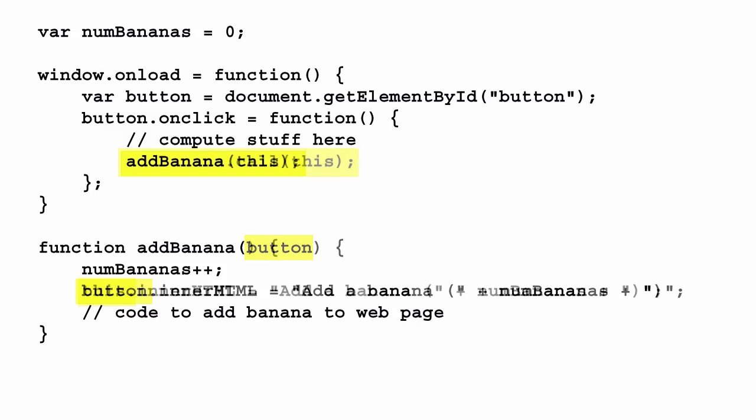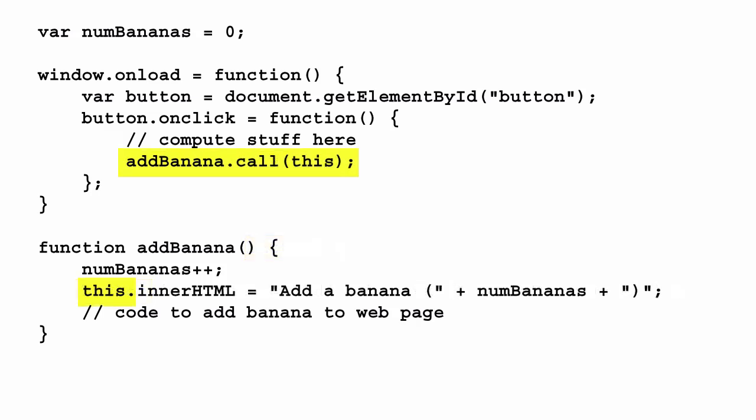There's actually another solution we can use here. There are two methods in JavaScript, `call` and `apply`, that allow you to set the value of `this` when you call a function. `call` and `apply` basically do the same thing — they call a function allowing you to set the value of `this`. The difference is just how you specify any arguments you want to pass. Here we're using the `call` method to call `addBanana` and set the value of `this` to the button object. Notice that `addBanana` doesn't have a parameter — we're setting the value of `this` behind the scenes. So you can use `call` as an alternative to passing `this` into a parameter of `addBanana`. For more, check out Chapter 13 of Headfirst JavaScript Programming.